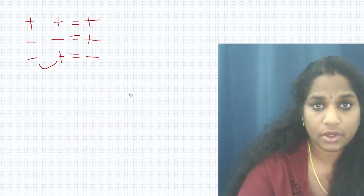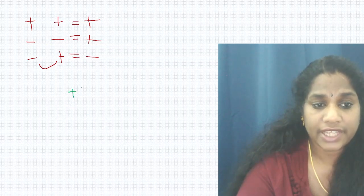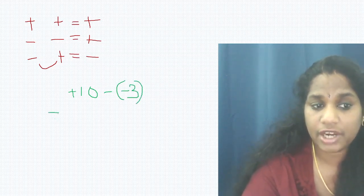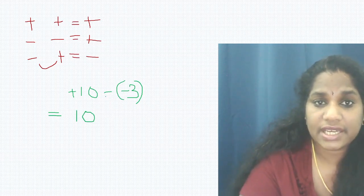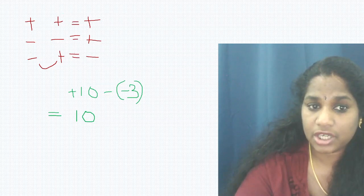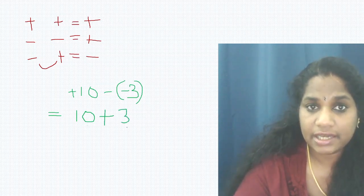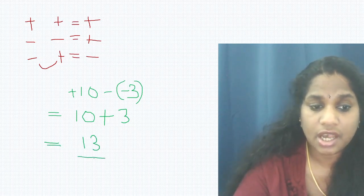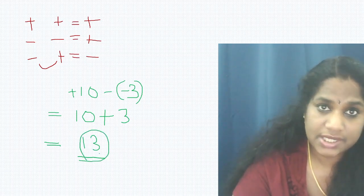One more example: positive 10 minus negative 3. Convert the two signs: minus and minus becomes plus, giving 10 + 3 = 13. We don't need to add a positive sign because it is positive by default. That is the answer — 13.